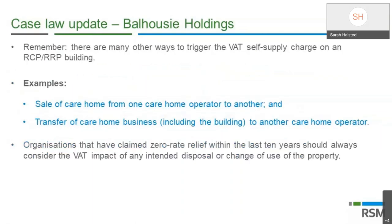The judgment is complex and we don't yet have a statement from HMRC on how it will work in practice. We understand a business brief will be published soon. In the meantime, charities, care homes, schools, and universities — anyone who uses relevant residential or charity buildings — should look at the Balhousie decision and think about how they could use it to structure a leaseback without triggering the self-supply charge. It is also important to note that apart from leaseback transactions, there are other ways to trigger a self-supply charge. If your organization has benefited from this zero rate in the last 10 years, you always need to consider the VAT impact of any intended disposal, including the sale of a care home from one operator to another or transfer of a care home business that includes the building.